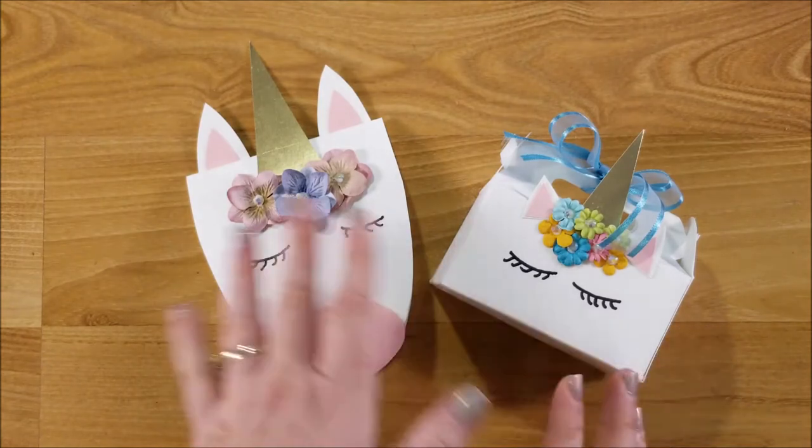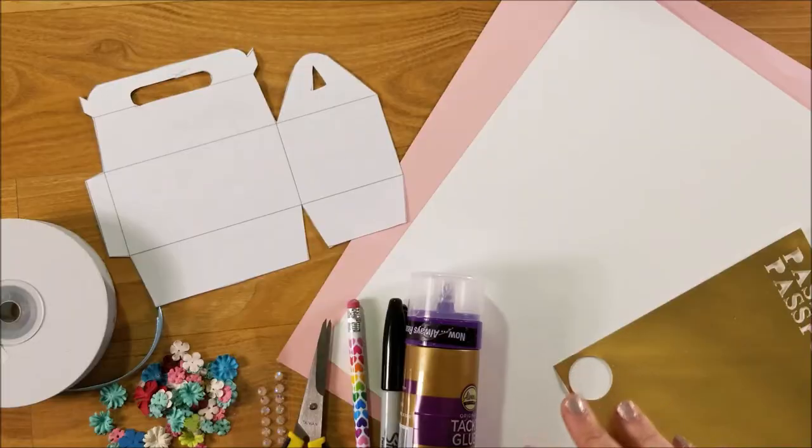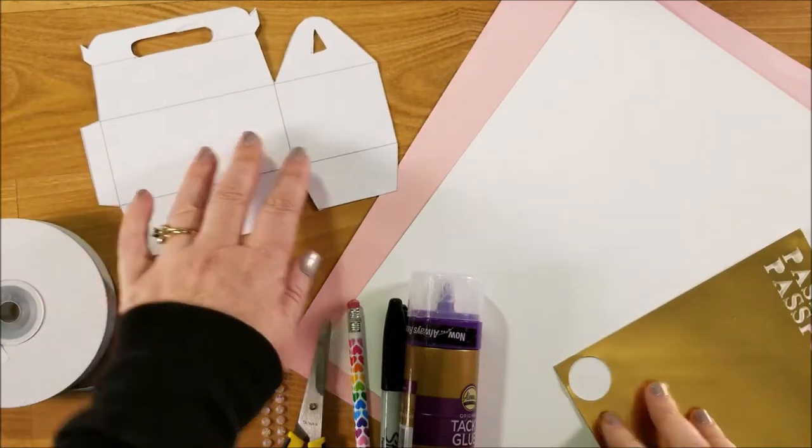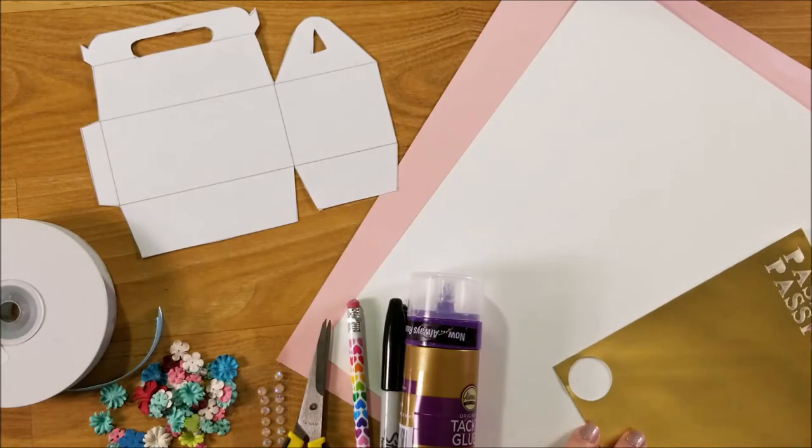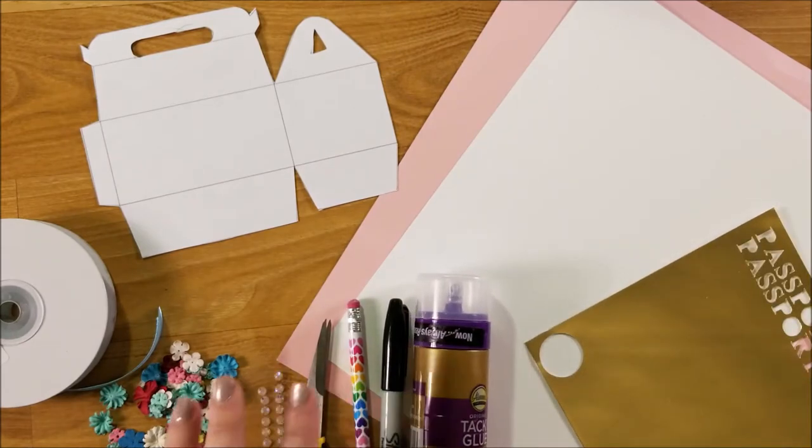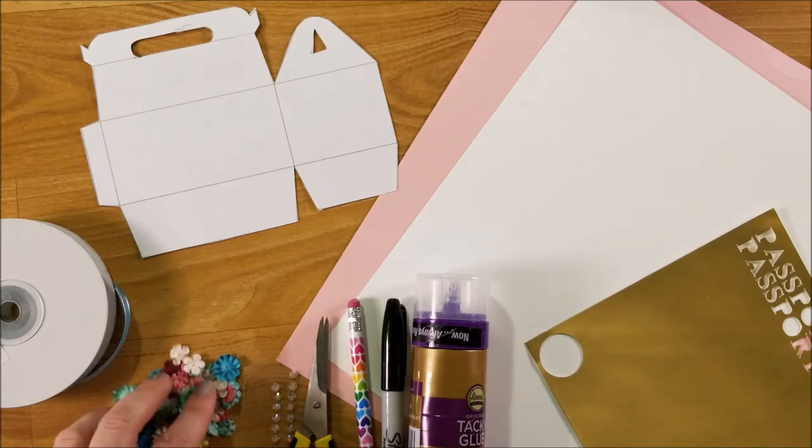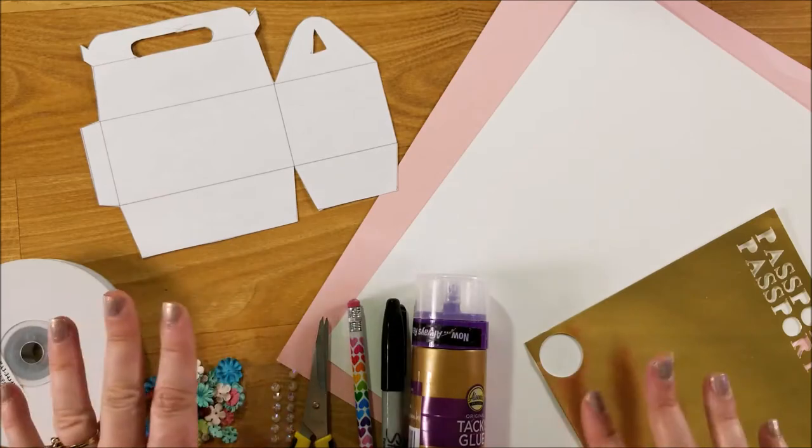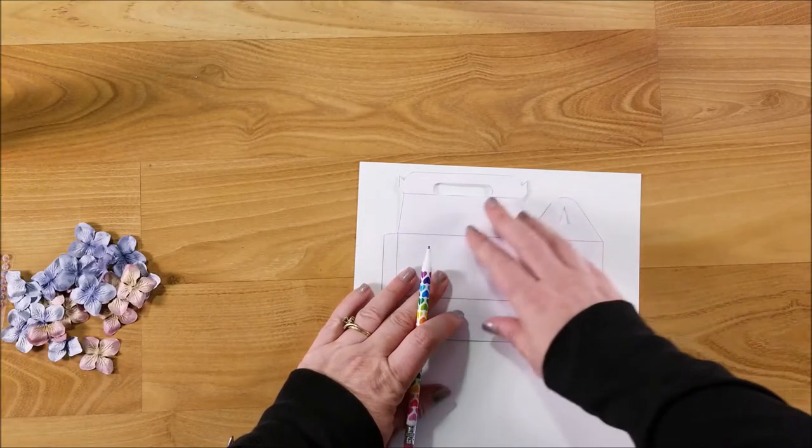So stick around, see what we need for these projects and we'll learn how to make super cute unicorn party supplies. For the gable box, I have cut out my template. You will need a piece of white cardstock, pink cardstock, and gold or yellow, some tacky glue, a sharpie, a pencil, some scissors, little tiny rhinestones, a handful of paper flowers, and then some ribbon.